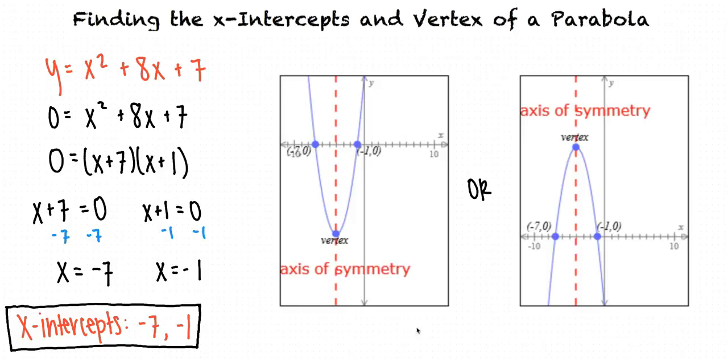In either case, the vertex lies on the axis of symmetry. This means that the x-coordinate of the vertex lies midway between negative 7 and negative 1. Because of this, we can find the x-coordinate of the vertex by using the midpoint formula.